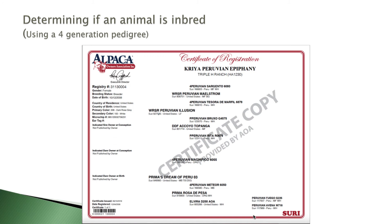As we examine each of these, our first step in this process is to determine if an animal is inbred. I'm sticking with the use of four-generation pedigrees to evaluate whether an individual is inbred or not. This animal, Crea Peruvian Epiphany — the first thing we look at when we decide if an animal is inbred or not is to look at what we would call the top side and the bottom side.